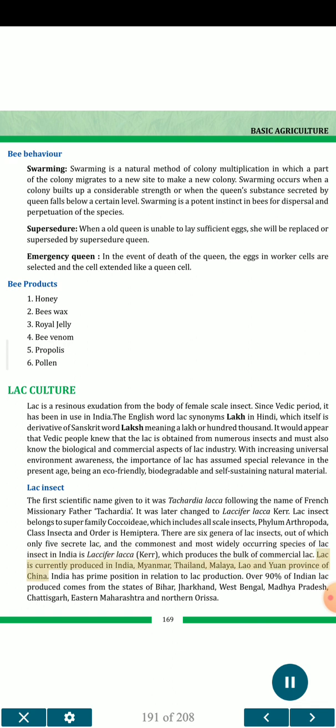There are six genera of lac insects, of which only five secrete lac. The commonest and most widely occurring species in India is Laccifer lacca Kerr, which produces the bulk of commercial lac. Lac is currently produced in India, Myanmar, Thailand, Malaya, Laos and Yunnan province of China. India holds a prime position in lac production. Over 90% of Indian lac comes from the states of Bihar, Jharkhand, West Bengal, Madhya Pradesh, Chhattisgarh, Eastern Maharashtra and Northern Orissa.